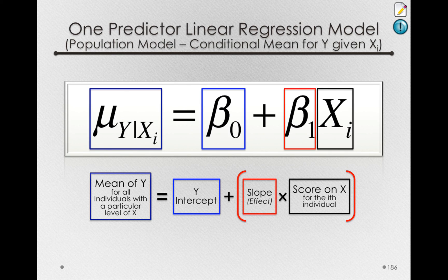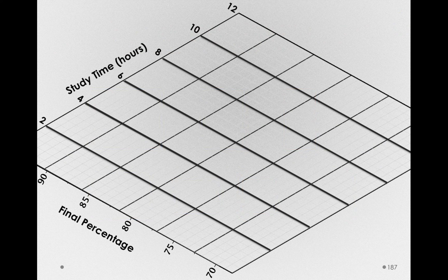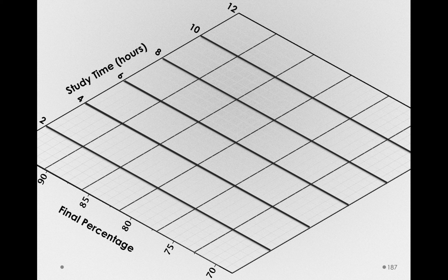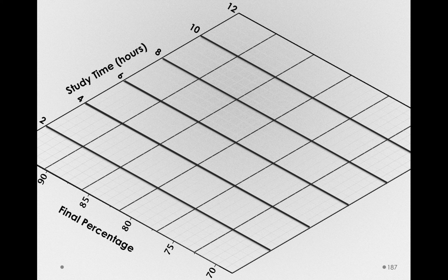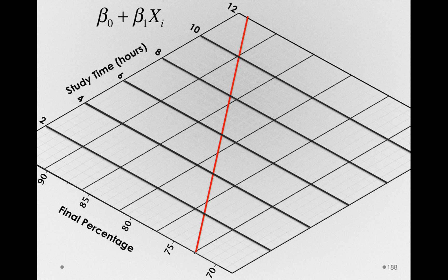Let's actually see this on a diagram. To do this, I'm going to have to rotate things a little bit. So final percentage here is still on the y-axis, and study time is still on the x, but we're looking at this on its side. Let me draw in the linear regression line. Beta 0 plus beta 1 xi. This is the true population regression line.